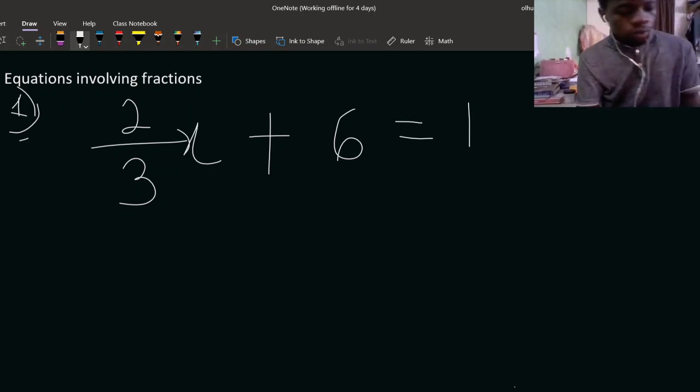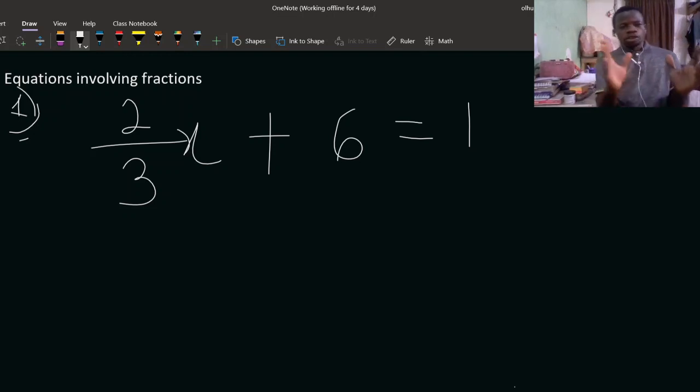What do we do when you have a question like this? The first thing that should come to your mind is what we are actually looking out for, and that is variable x. This variable x is what we are calculating. So what do you do? Look at how you can get rid of whatever is multiplying or around x. What is multiplying x is two upon three.